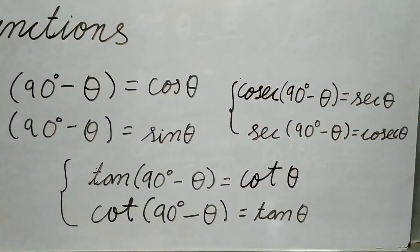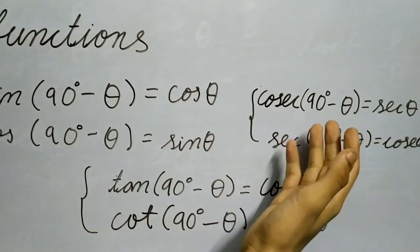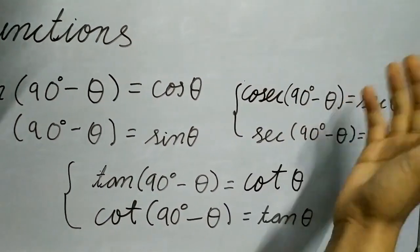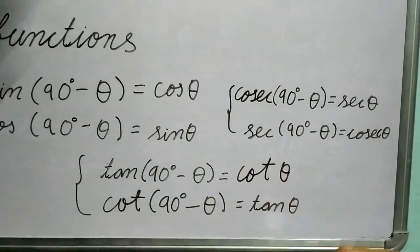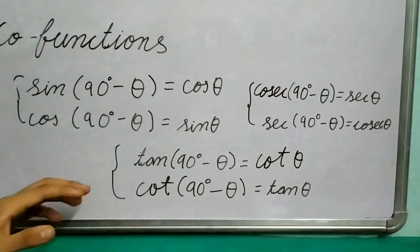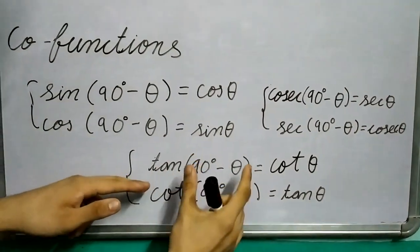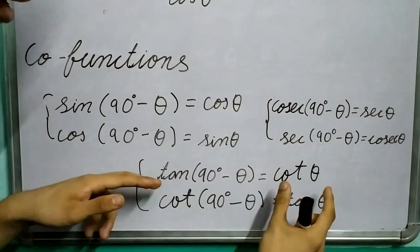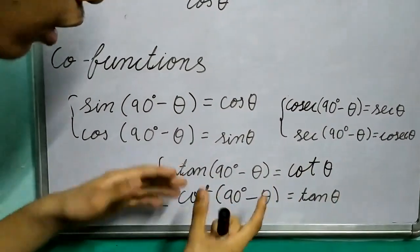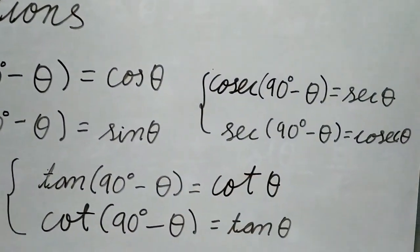And similarly we can prove this: cosec(90° - θ) gives us sec θ, and sec(90° - θ) is cosec θ. The third co-functions are tan(90° - θ) and cot(90° - θ) gives us tan θ.